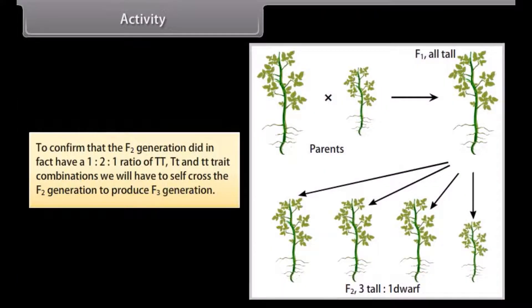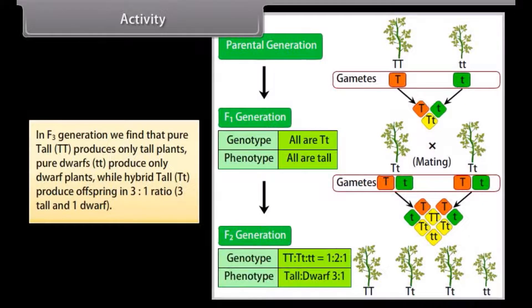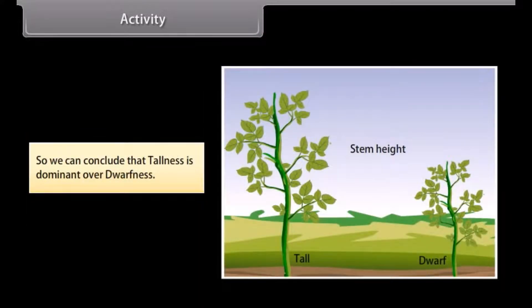Activity: To confirm that the F2 generation did in fact have a 1:2:1 ratio of TT, Tt, and tt trait combinations, we will self-cross the F2 generation to produce F3. In F3, pure tall TT produces only tall plants, pure dwarf tt produces only dwarf plants, while hybrid tall Tt produces offspring in a 3:1 ratio — 3 tall and 1 dwarf. So we can conclude that tallness is dominant over dwarfness.